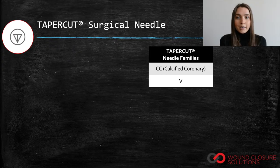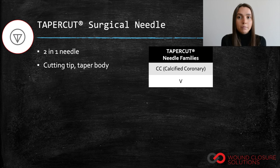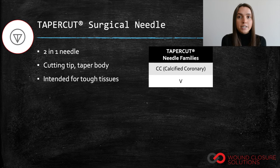Taper cut needles are two in one. They have a cutting tip to allow for enhanced sharpness and a taper body to allow for better stability. These needles are intended for tough, difficult to penetrate tissues.